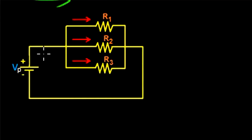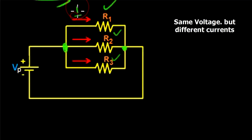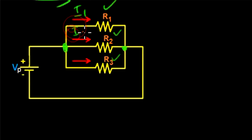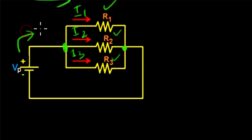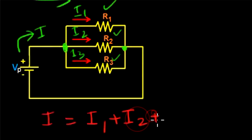In the parallel circuit, you can see that there is a battery providing a potential difference, and the current splits into three paths. In each path there are resistors R1, R2, and R3 — these kinds of connections are known as parallel connections. The three branches are connected to common points, so the potential difference across each resistor is the same. There are three currents flowing through the three different branches: I1, I2, and I3. The total current I entering the circuit equals I1 + I2 + I3, since the current divides into the different branches.